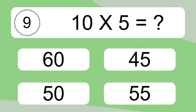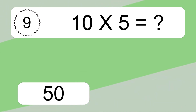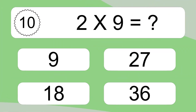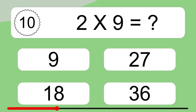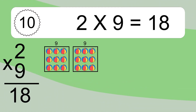Ten times five equals what? Ten times five equals 50. We have ten boxes, and each box has five colorful balls inside. If you count all the balls in all the boxes together, you will have ten times five balls. This equals 50 balls. Two times nine equals what? Two times nine equals 18. We have two boxes, and each box has nine colorful balls inside. If you count all the balls together, you will have two times nine balls. This equals 18 balls.